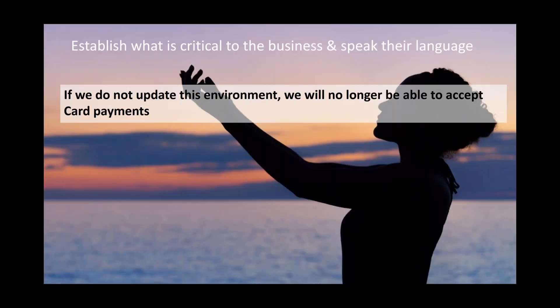Essentially, we have to establish what is critical to the business and then make sure we can speak their language. Rather than saying 'we have to patch the PCI environment,' say 'if we don't update this environment, we'll no longer be able to accept card payments.' So having half an hour's downtime tomorrow at three in the morning, where we may have one customer who can't complete a transaction — or we lose our accreditation and can't take card payments from anybody. It's a business choice, but you've got to give them the honest answer and get buy-in from C-level people. Remember, it's the CISO whose butt is on the line.